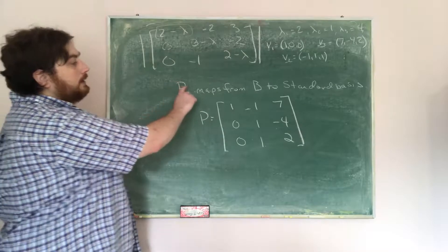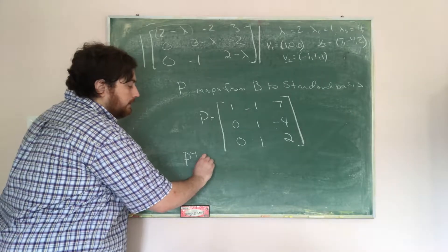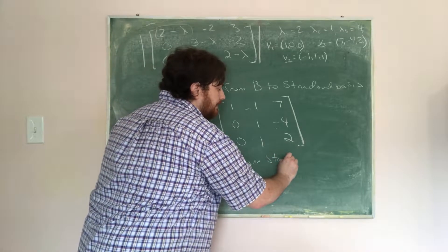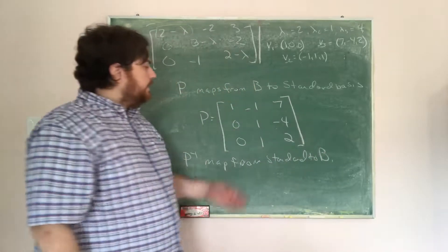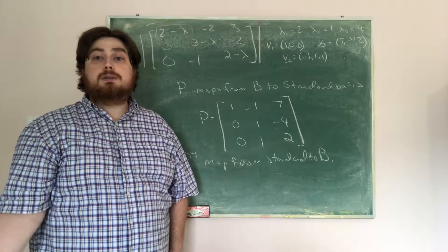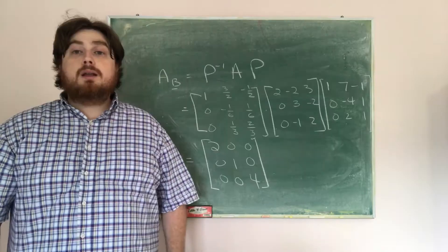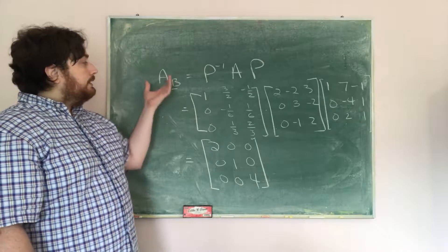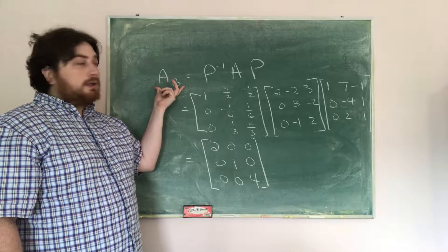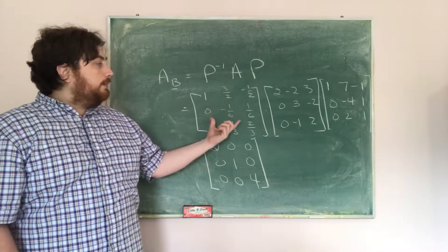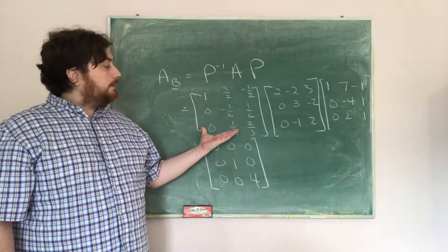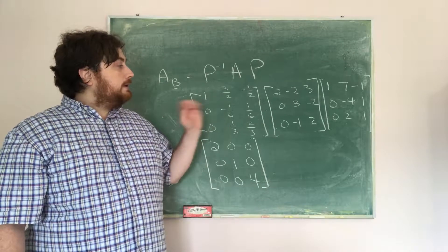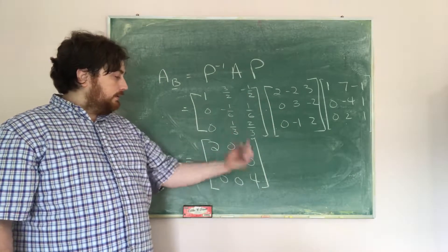To find the map from the standard basis back to B, we just take P inverse. So P inverse maps from the standard basis to B. The matrix representing T with respect to the eigenvector basis is P⁻¹AP. I found P inverse using a calculator, and multiplying P⁻¹, then A, then P together gives the matrix [[2, 0, 0], [0, 1, 0], [0, 0, 4]].